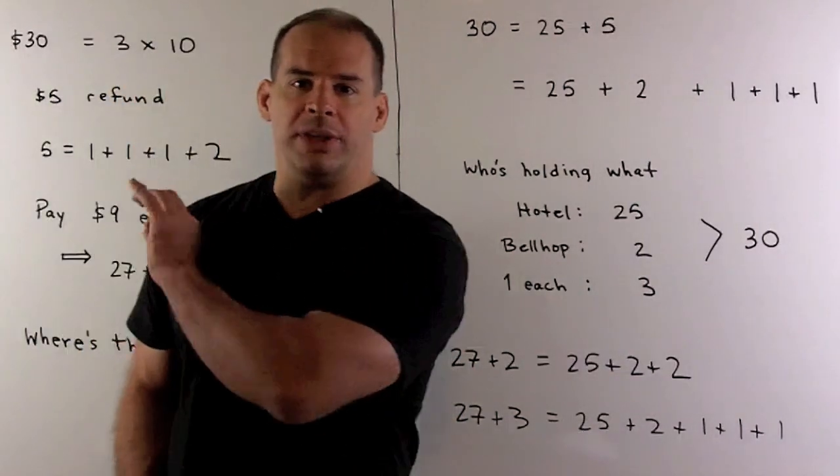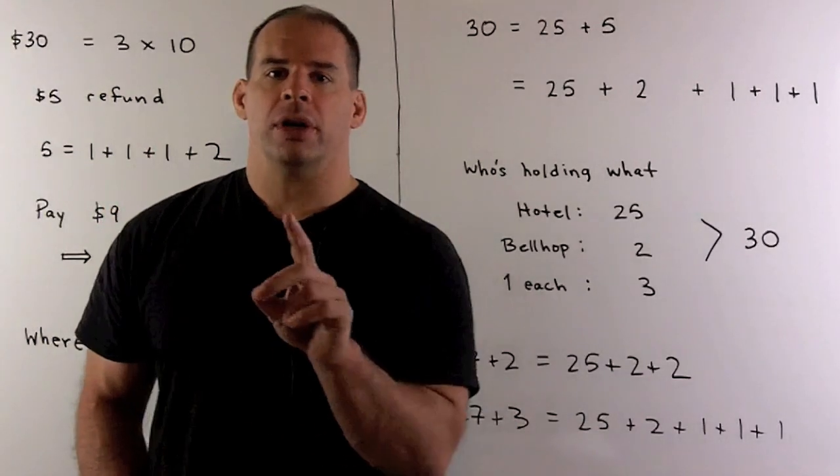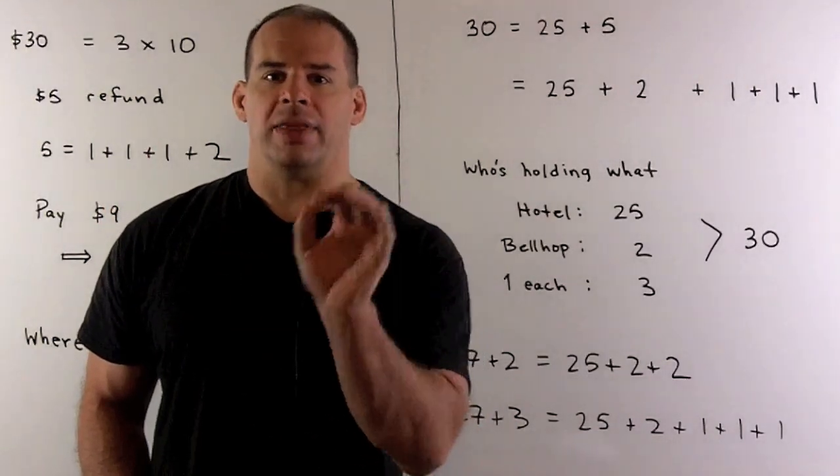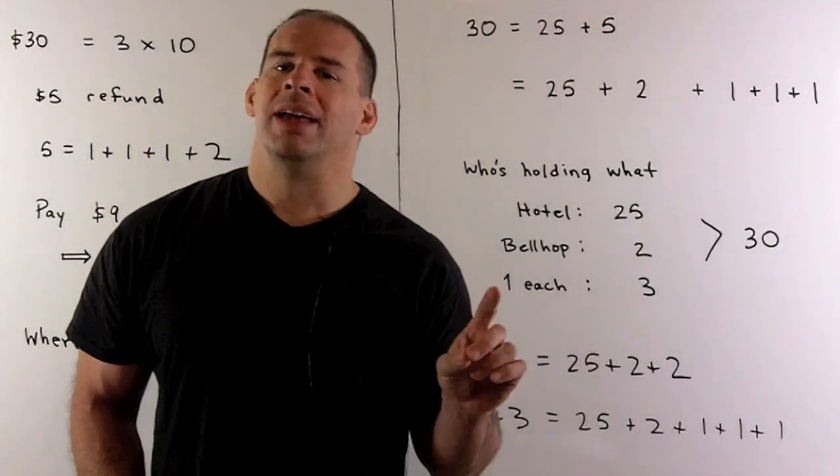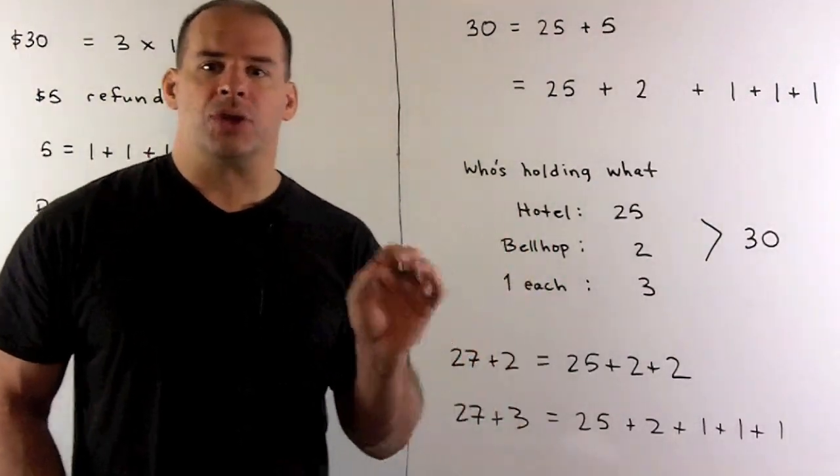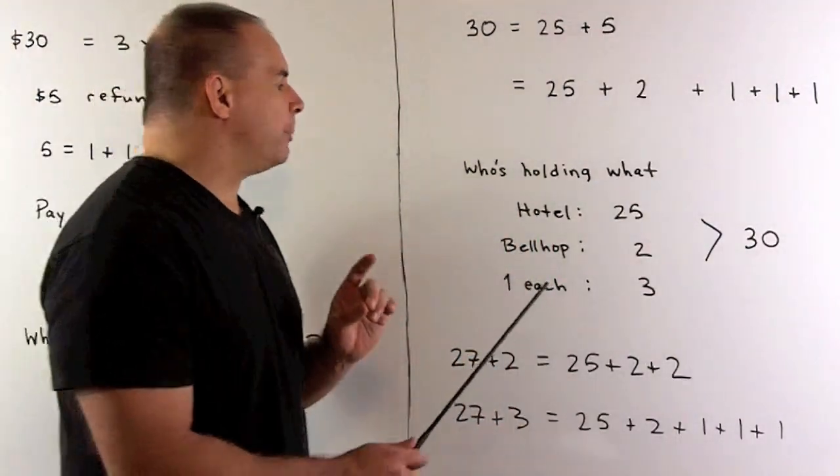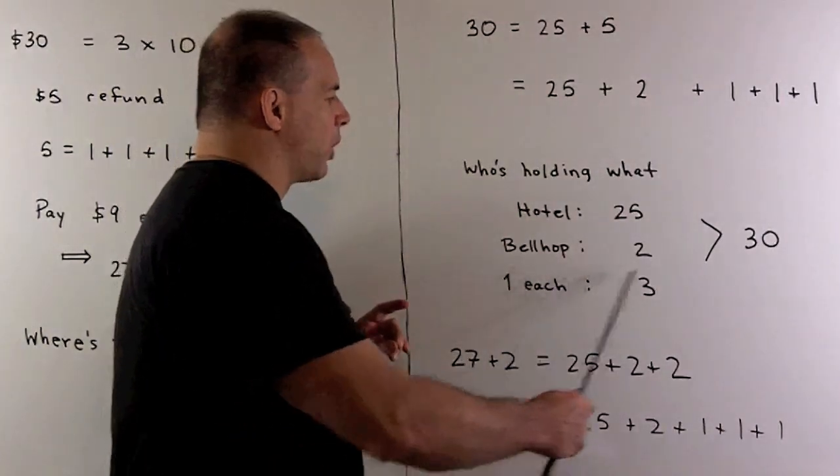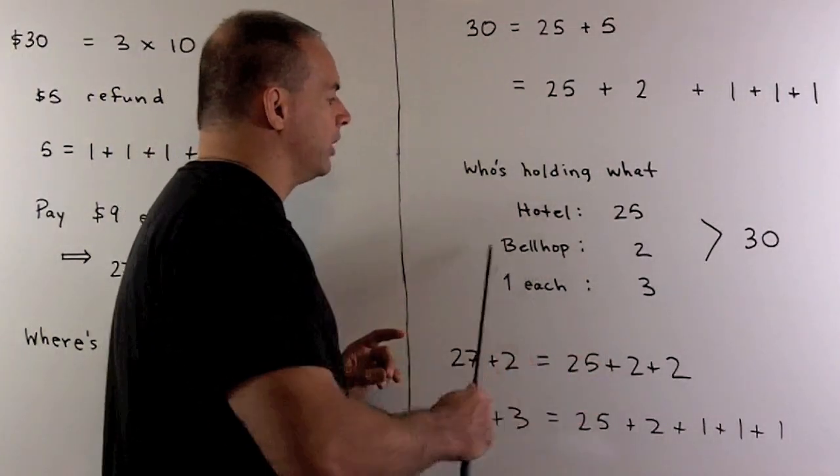Now, in the reasoning we did over here, we took the $27, the $9 each that was paid out, and then we added on the tip to the bellhop. So you'll note that's a redundancy. We've already paid the bellhop when we do our reckoning here. That's already included in the $27.